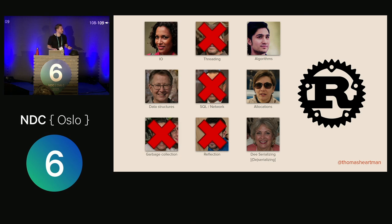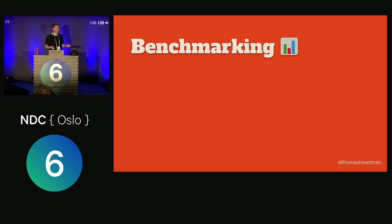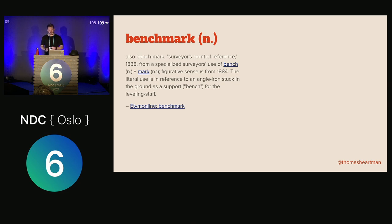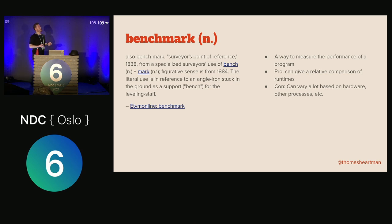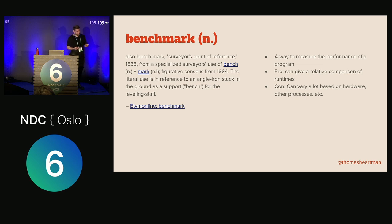Now that we have a list of suspects, let's do some actual benchmarking and figure out what's going on. The term 'benchmark' apparently dates from 1838, used in a figurative sense in the 1880s — fun if you like etymology. What it is, is a way to measure the performance of a program by running it and measuring the output. It gives you a relative overview of how well something runs, so you can compare multiple versions of the same algorithm or run on different hardware.